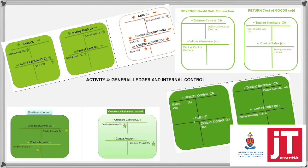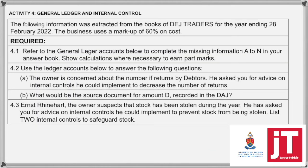Now, this is also slightly a different layout to what you are used to. So if we look at this, they say the following information was extracted from the books of DAJ Traders ending the 28th of February 2022. The markup of the business is 60% on cost. Refer to the General Ledger accounts below and complete the missing information A to N in your answer book. Show calculations to earn part marks if necessary. And then they ask us two theory questions that we will get to.